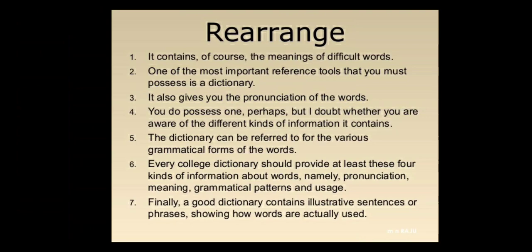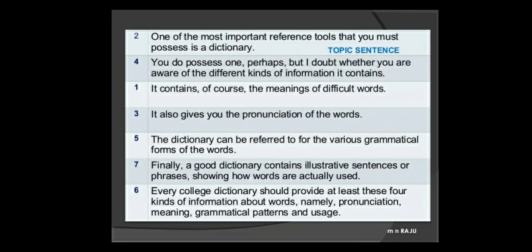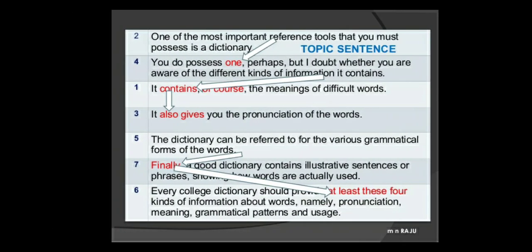One of the most important reference tools you must possess is a dictionary, which gives you the pronunciation of words and contains the meaning of difficult words. Every college dictionary should provide at least three to four kinds of information: pronunciation, meaning, grammatical pattern, and usage. A good dictionary also illustrates sentences or phrases showing how words are actually used. Use a dictionary to use good words and check their sequential meaning.